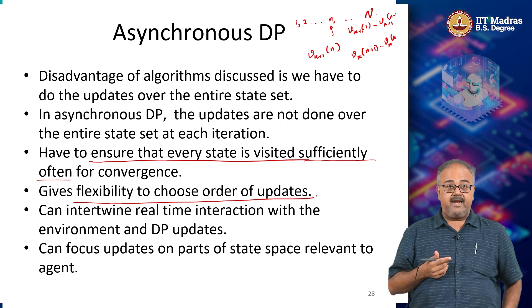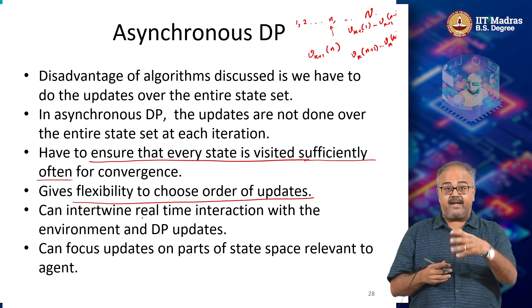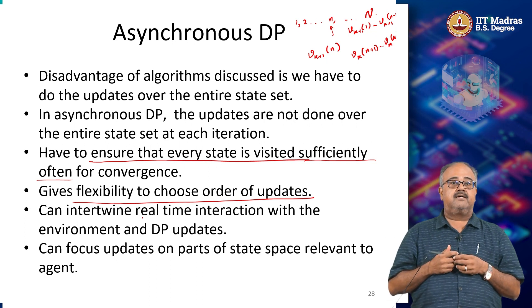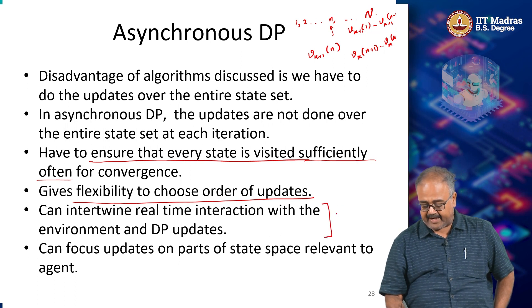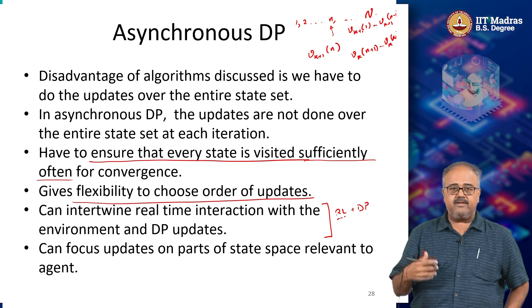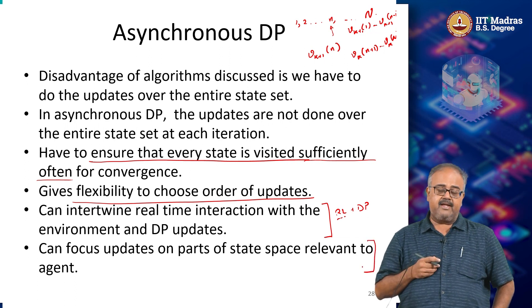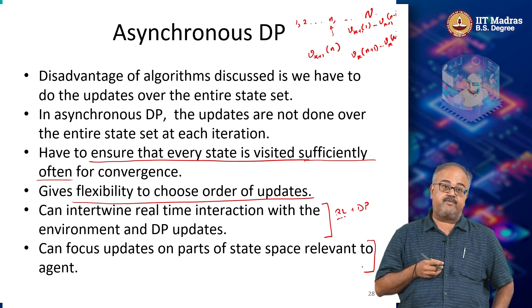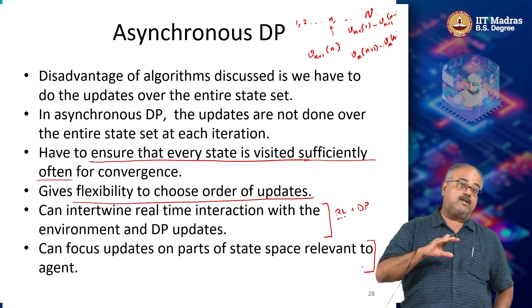This gives us the flexibility to choose the order of updates. We can go in whatever order we want, and more importantly we can also do things like have some interactions with the environment and then some dynamic programming updates. This can be done - we can basically interleave something like RL and DP. We will come to the RL part in a bit. We can also focus updates on parts of the state space that are relevant to the agent, and we will look at how this helps us design efficient algorithms.